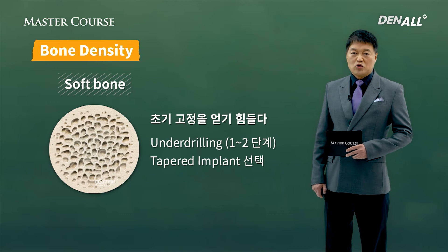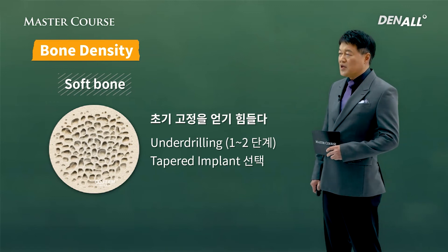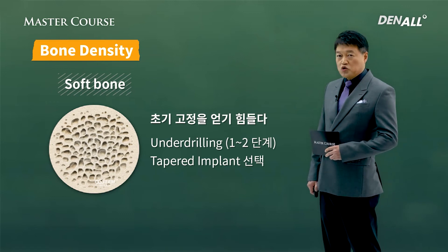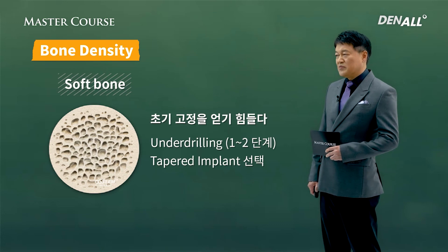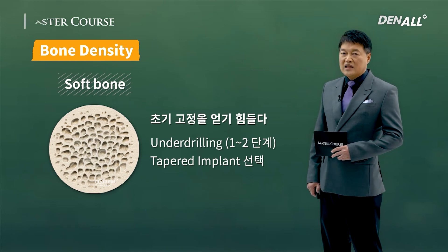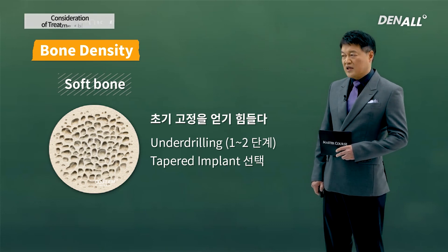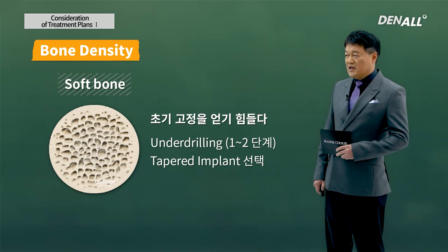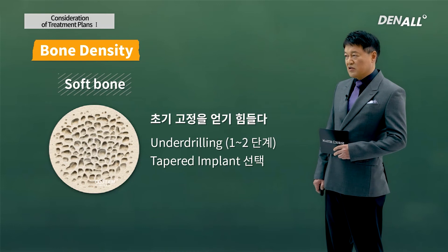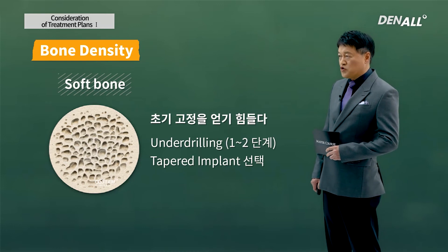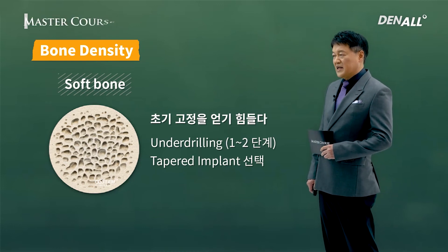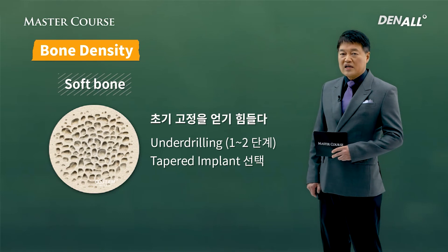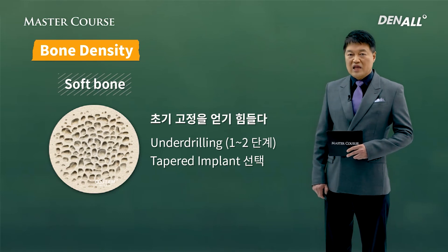This is the opposite case — very soft bone. For soft bone, it is very difficult to get initial stability. Therefore, you need to do under-drilling by one or two sizes. Final drilling should be one or two steps down. Under-drilling needs to be done to gain initial stability, and that is the key to preventing implant failure.